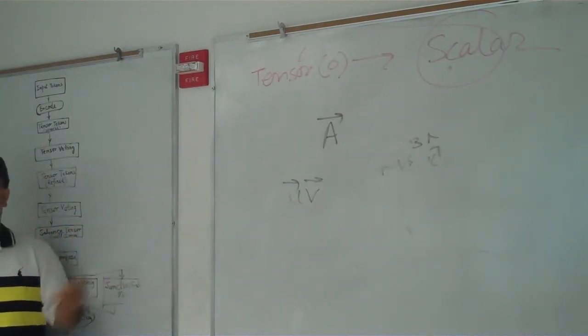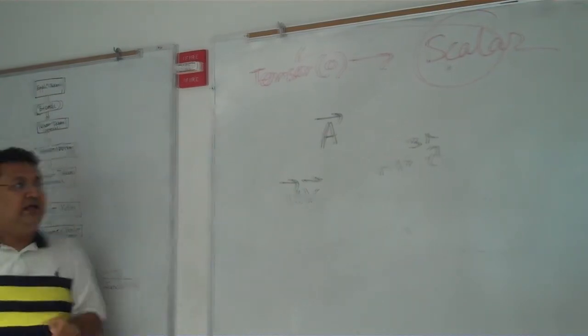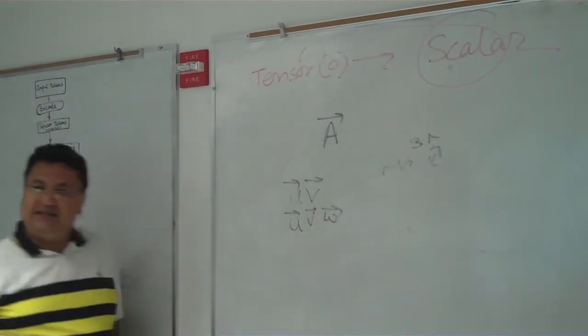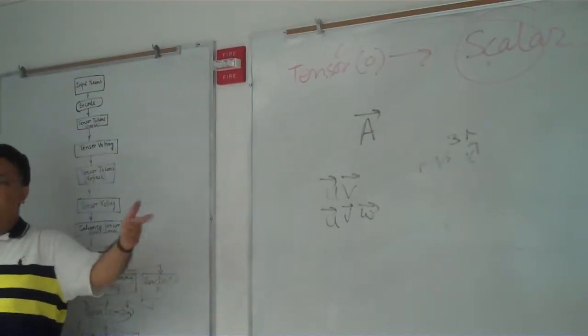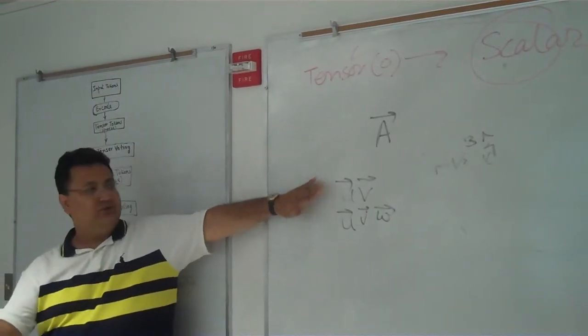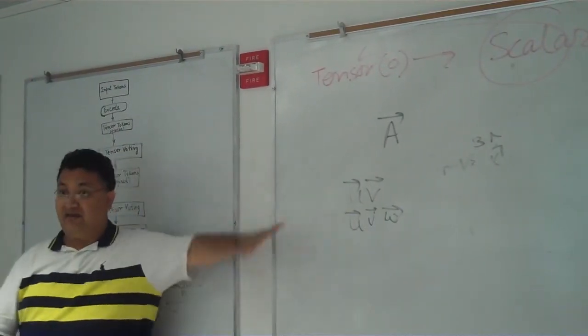If I say what is this? You will say this is a tensor of rank 3 or triad. So this is vector. This is representation of dyad or tensor 2. This is representation of triad.